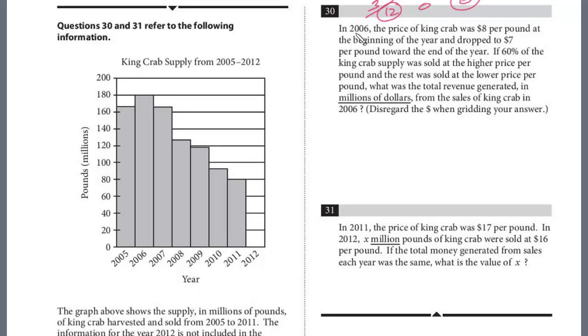Question 30. In 2006, the price of king crab was $8 a pound at the beginning of the year and dropped to $7 per pound toward the end of the year. If 60% of the king crab supply was sold at the higher price per pound and the rest was sold at the lower price per pound, what was the total revenue generated in millions of dollars from the sale of king crab in 2006? Note this y-axis is already in millions of pounds. And so for 2006, it is exactly 180.